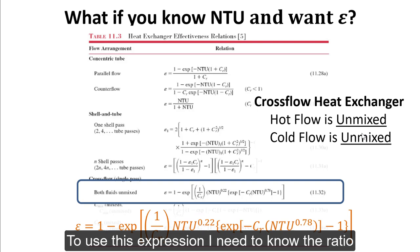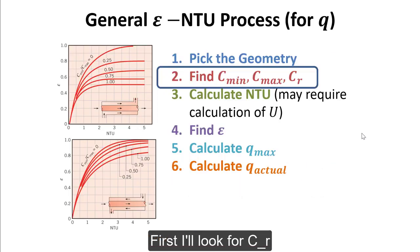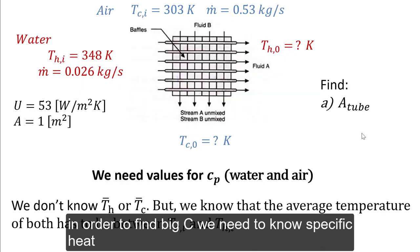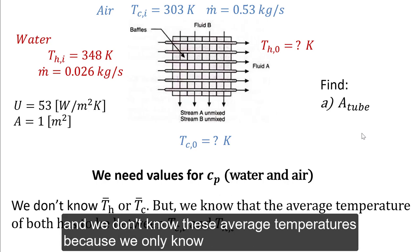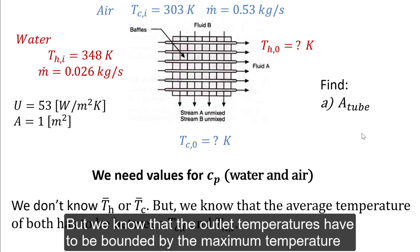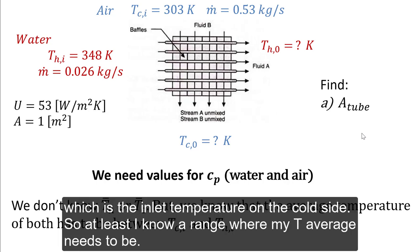To use this expression, I need to know the ratio of the fluid heat capacities, big C_R, and I need to know NTU. First, I'll look for big C sub R. In order to find big C, we need to know specific heat. The problem is that specific heat is a function of the average temperature on the hot side and the cold side. We don't know these average temperatures because we only know the inlet temperatures and not the outlet temperatures on either side. But we know the outlet temperatures are bounded by the hot inlet and cold inlet temperatures, so we at least know a range where T average needs to be.